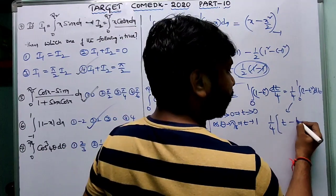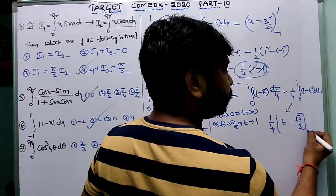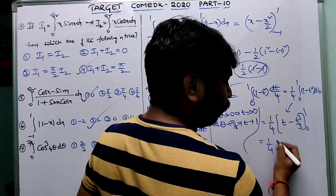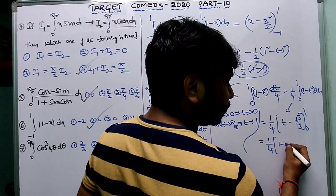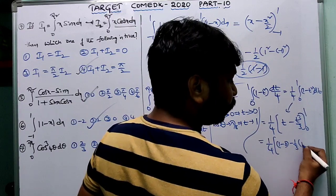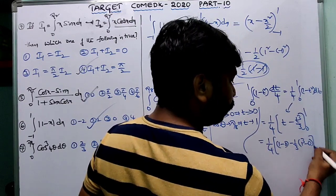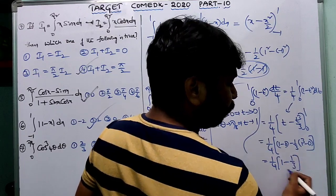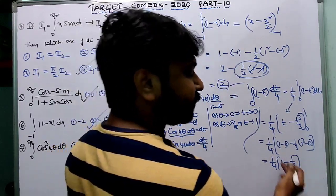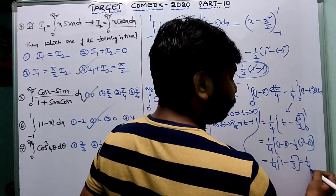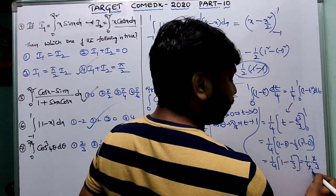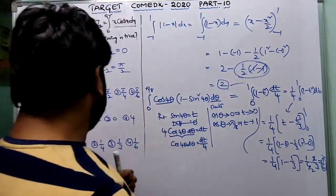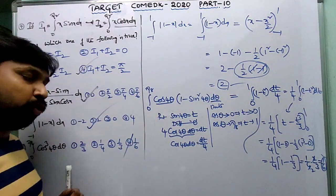So the integral equals (1/4) times integral from 0 to 1 of (1 minus t²) dt = (1/4)·[t minus t³/3] from 0 to 1 = (1/4)·(1 minus 1/3) = (1/4)·(2/3) = 1/6. The fourth option is the correct answer.